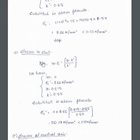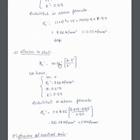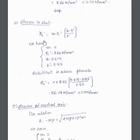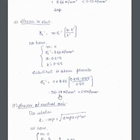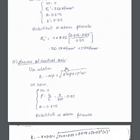Next, we find the stresses in steel for the tension zone. The expression is: σs' = m × σc' × (a − k') / k'. All values are known; σc' was just found. Substituting all values, σs' = 56.26 N/mm², which is less than 230 N/mm². Hence it is safe.